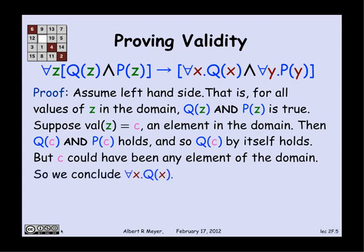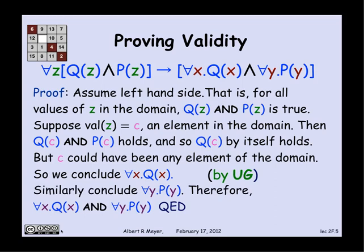Now we're in an interesting situation, because we just proved that q of c holds, and we know nothing and have assumed nothing about c except that it's an element of the domain. c could have been any element of the domain, and we've managed to prove that q of c holds. So it follows that we have really proved that for every x, q of x holds. That step of saying I proved it for q of a given element without making any assumptions about the given element except that it's in the domain, and therefore I can conclude that it holds for all domain elements, is a very natural rule called UG, universal generalization. I've just proved that for all x q of x holds, and by a completely symmetric argument, for all y p of y holds. Having proved both, clearly the and holds, and I've just proved that the right-hand side of this implication is true given that the left-hand side is true.